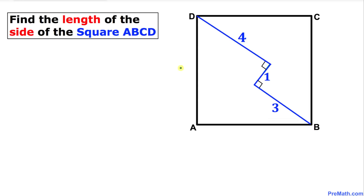Welcome to pre-math. In this video tutorial we are going to calculate the length of the side of square ABCD. We have line segments that are perpendicular to each other, and the length of one line segment is four, another is one, and the third is three.